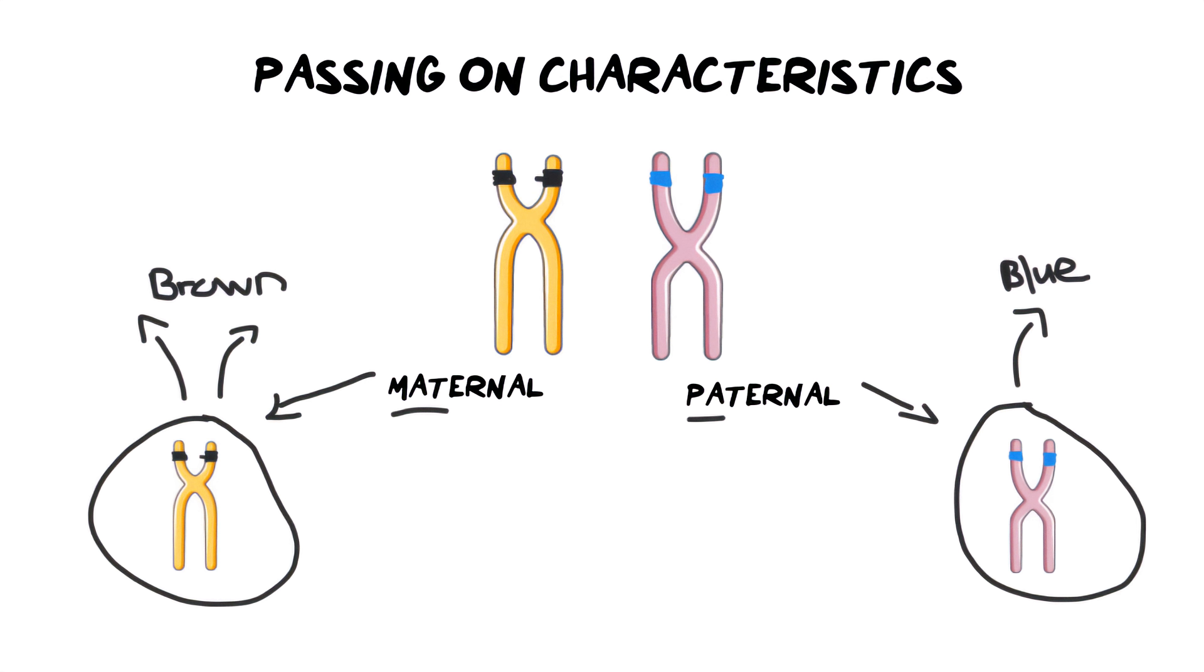Now to take this even further, we need to describe these alleles in a way with letters. And what we do is we use upper and lowercase letters to describe the characteristic. And in this instance, because we are using eye color brown and blue, I'm going to use the letter B for now. And I'm going to elaborate very soon as to why I'm using capital Bs for the one and lowercase bs for the other.